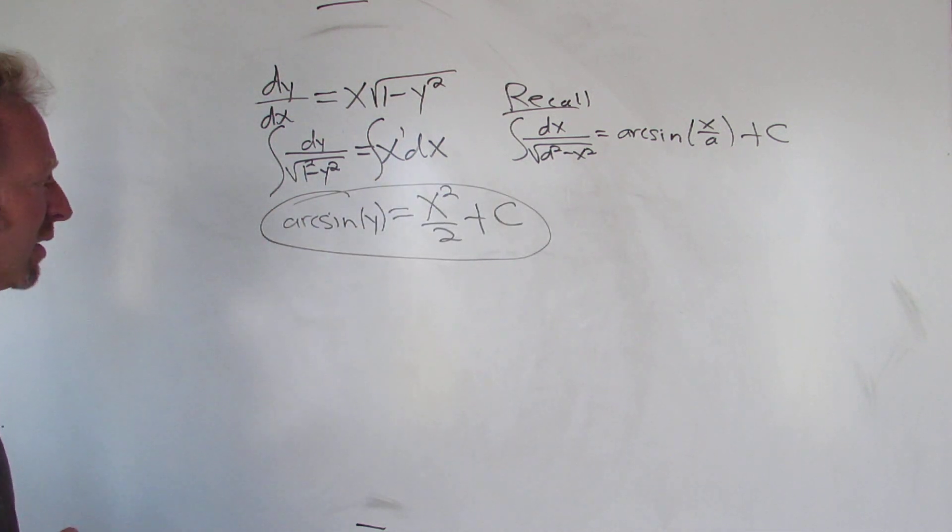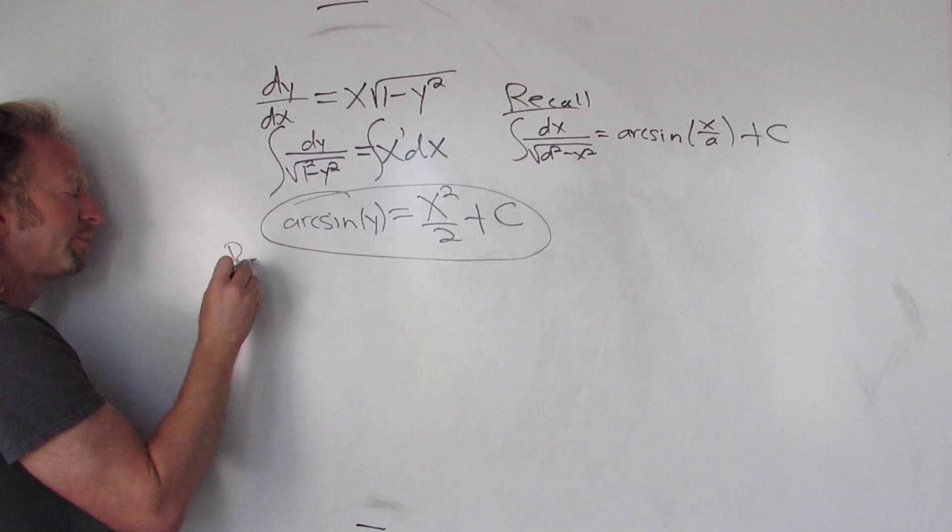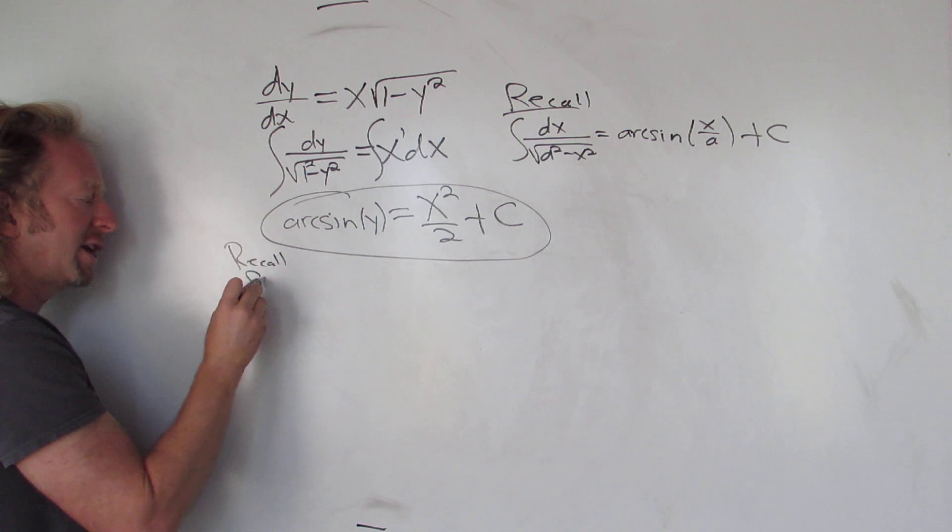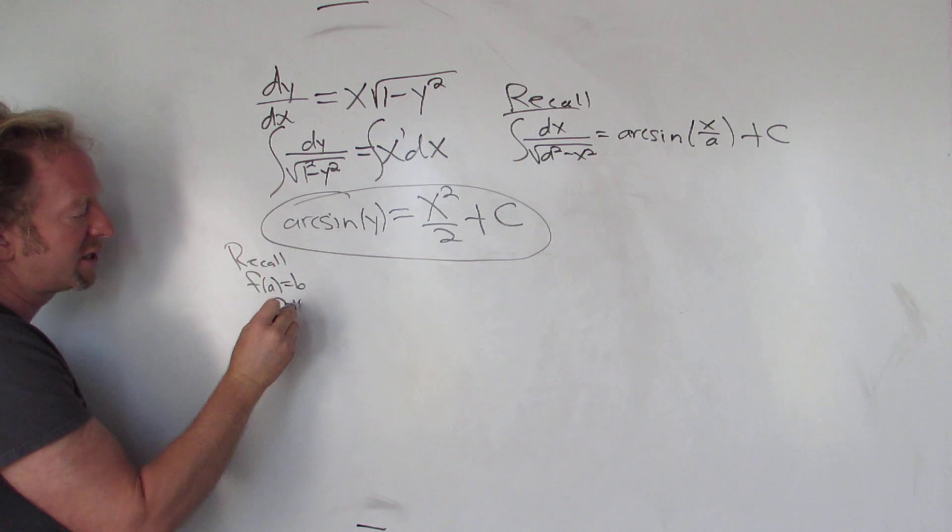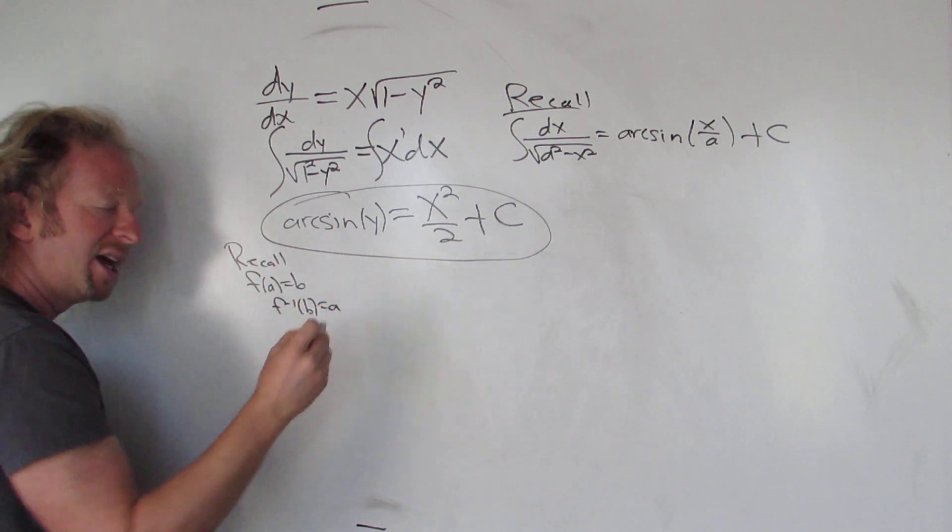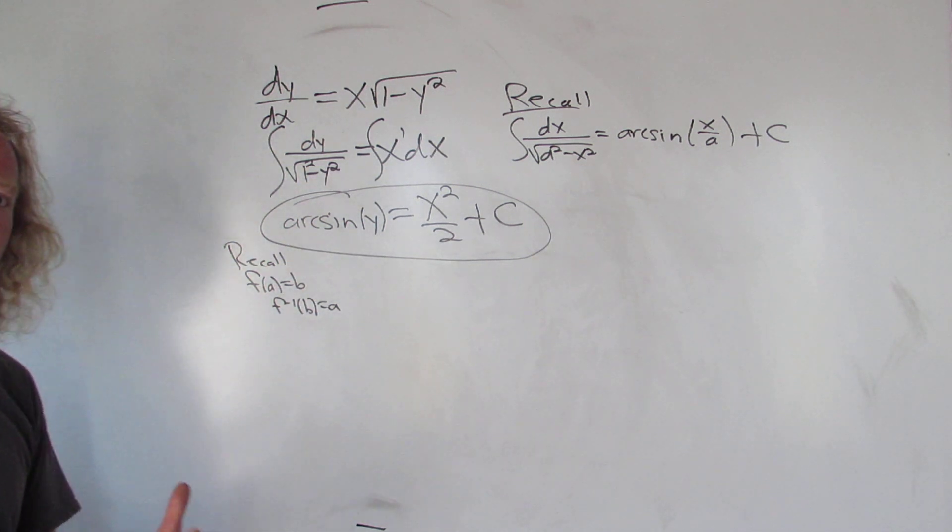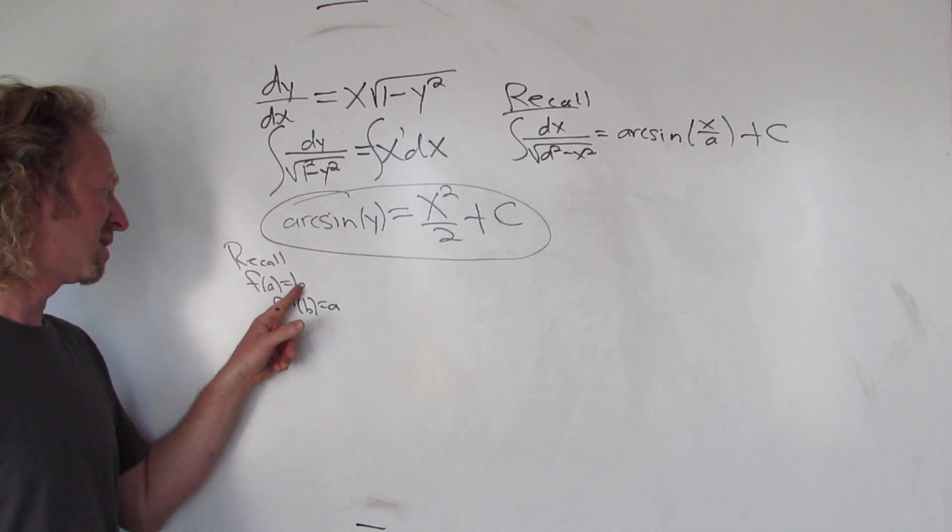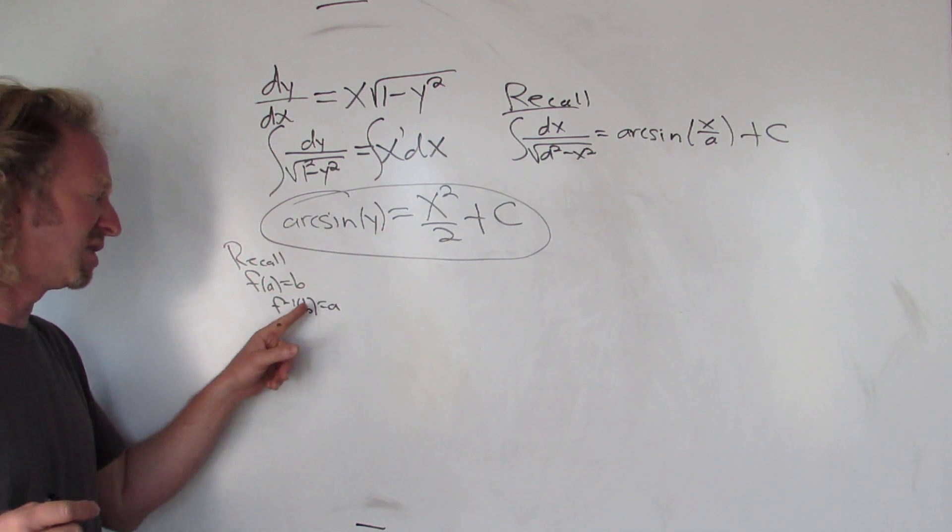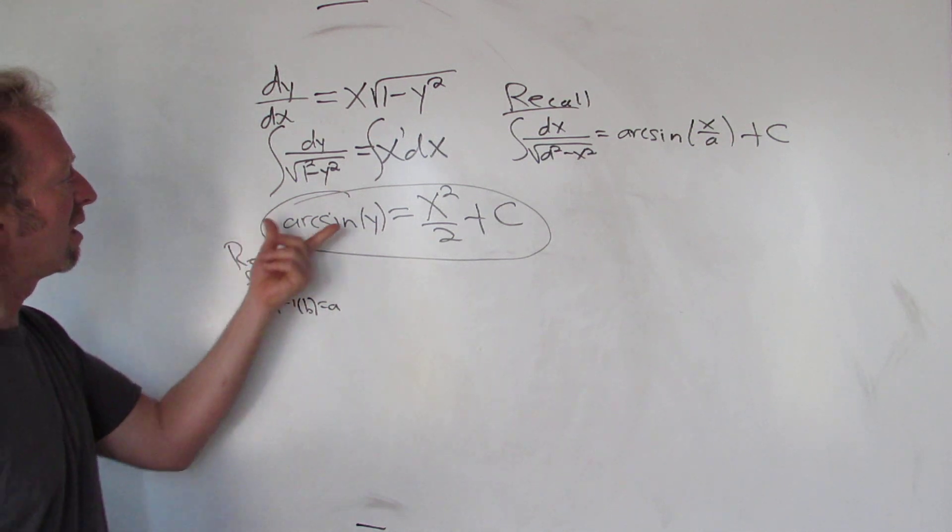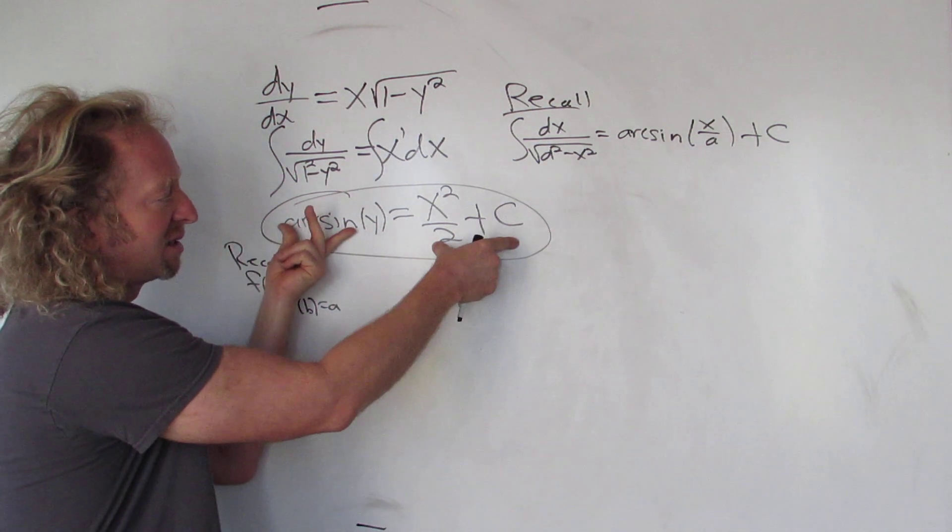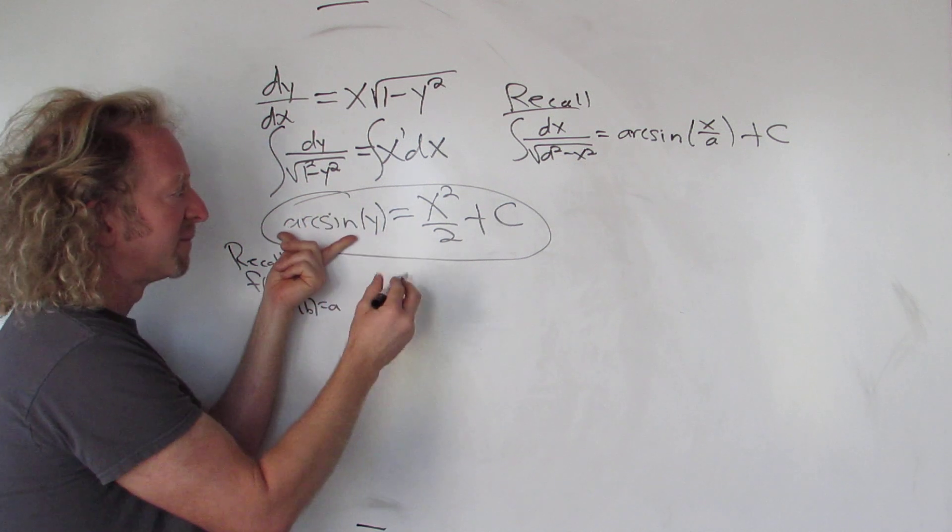Let's go ahead and do it. So first recall that you have a function f and it takes a and sends it to b. The inverse function undoes that—it takes b and sends it to a. It's not an algebraic operation, it's just an intuitive one. So if f takes a and sends it to b, the inverse function takes b and sends it back to a.